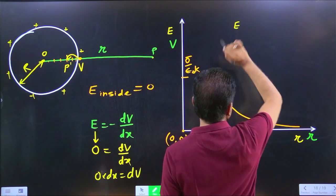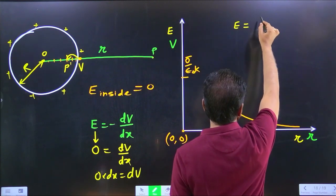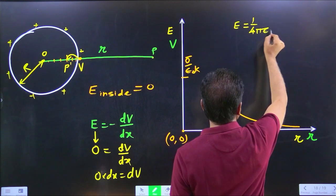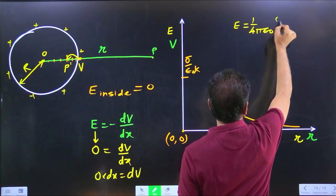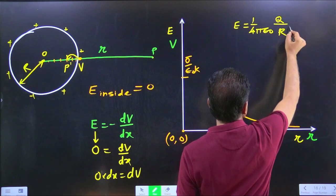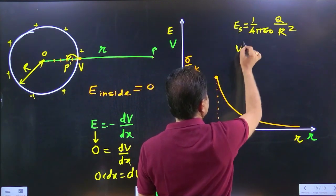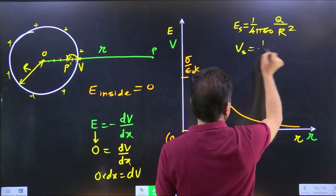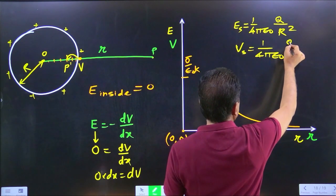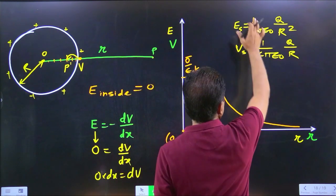Electric intensity on the surface is (1/4πε₀) × q/R², and potential on the surface is (1/4πε₀) × q/R.